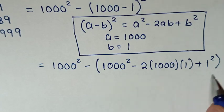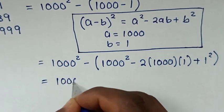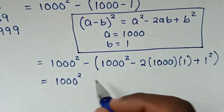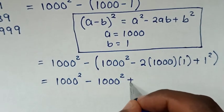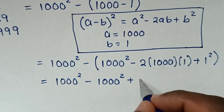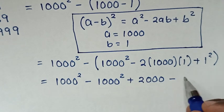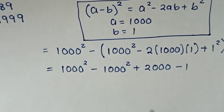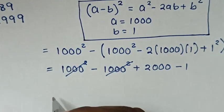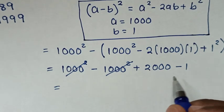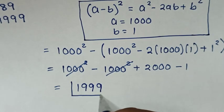Then in the next step, we'll open the brackets by multiplying the negative inside the bracket. So it will be equal to this 1000 square, then negative times this will be negative 1000 square, then negative times negative will be positive — 2 times 1000 times 1 is 2000. Then negative times positive will be negative — 1 square is the same as 1. From here, 1000 square minus 1000 square is 0, so this and this will cancel. Then it will be equal to 2000 minus 1 is 1999. Therefore, this is the correct answer.